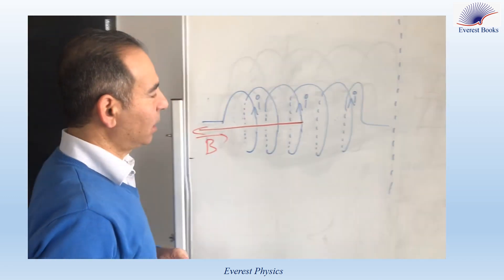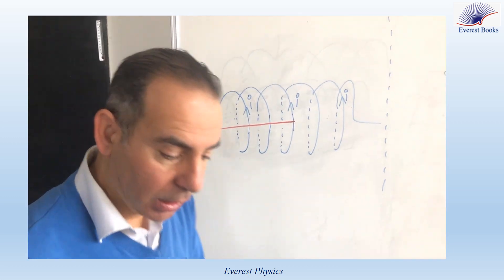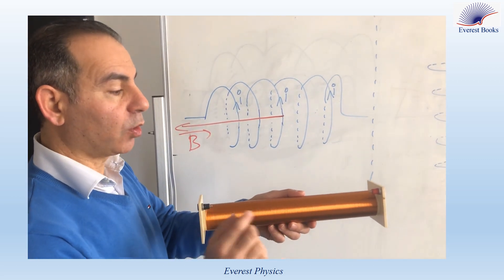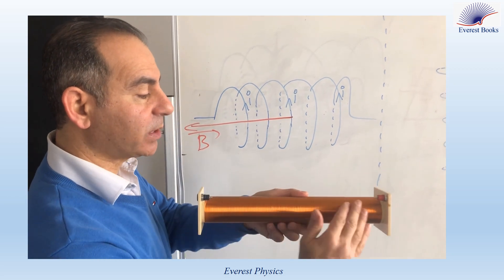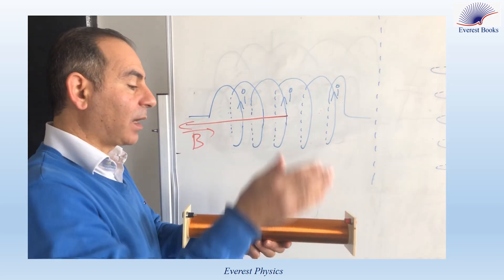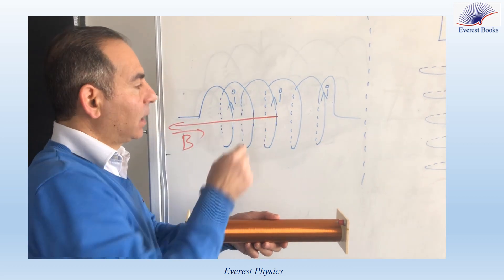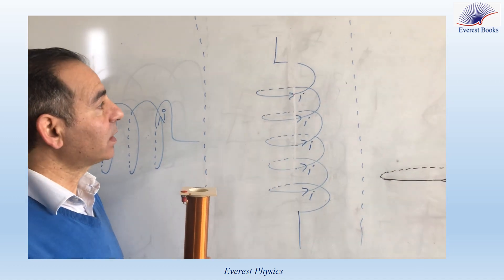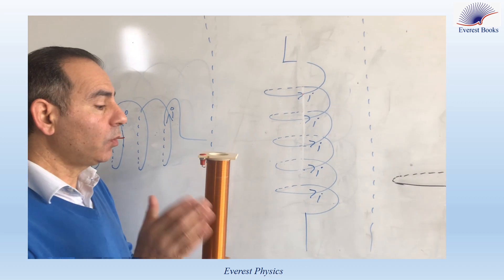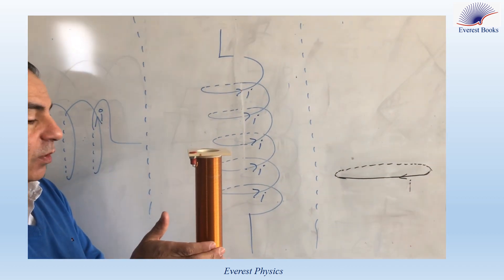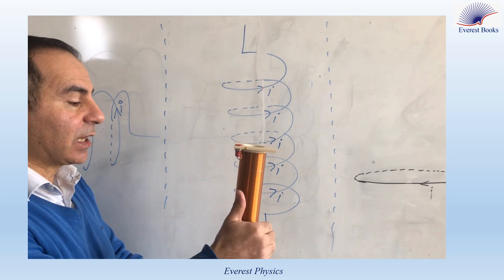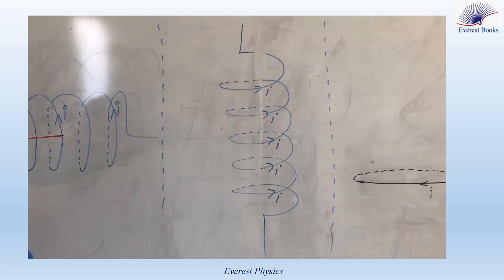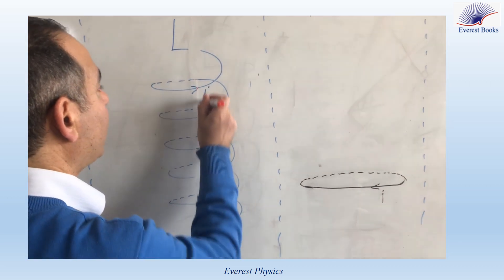What do we mean by solid and dashed lines? If you look directly at the solenoid, you can see only half of each loop — the parts that can be seen are represented by solid lines and the other parts by dashed lines. In this case, the axis of the solenoid extends along the vertical, so the magnetic field could be vertically upward or downward. Using the right-hand rule, curling the fingers in the sense of the current, the thumb points vertically upward, so the magnetic field inside the solenoid is directed vertically upward.